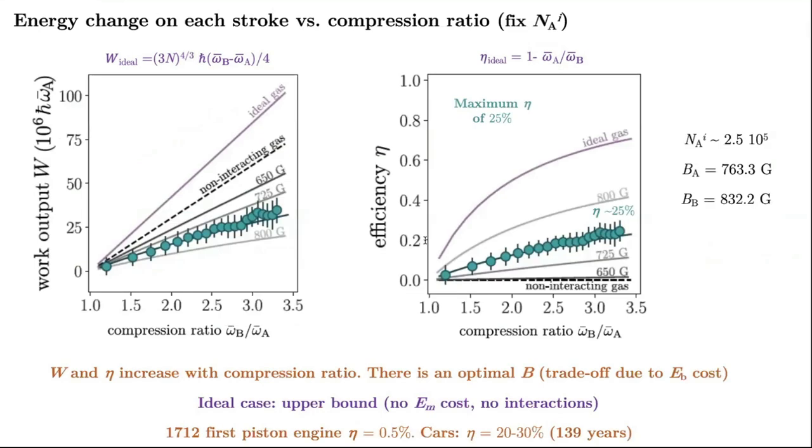Here, we can see the work output and the efficiency for a fixed number of particles and as a function of the compression ratio. For example, for a compression ratio higher than 2, we have an efficiency higher than 10%. And, for the maximum compression ratio we can achieve in the experimental setup, we have an efficiency of 25%. And, just for having a comparison point, the efficiency of nowadays cars is between 20 and 30%.